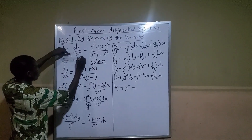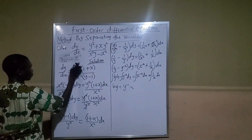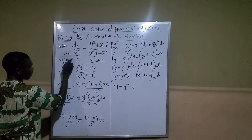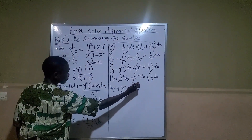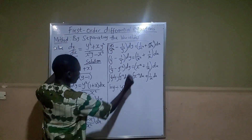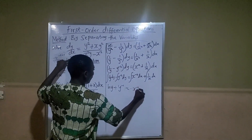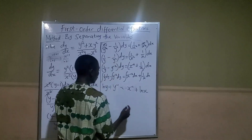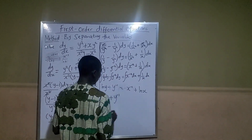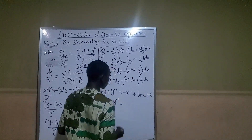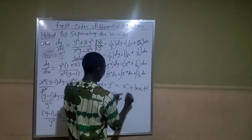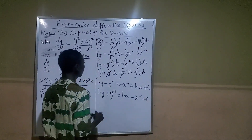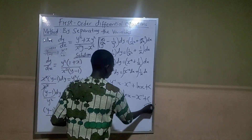For the right side: integrating x raised to minus two — add one to the power to get minus one, divide by minus one. That gives x raised to minus one over minus one. Using the minus sign out front gives minus x raised to the power of minus one. Integrating one over x gives ln x. So the final answer is: ln y plus y raised to the power of minus one equals ln x minus x raised to the power of minus one plus C, where C is the constant of integration. Stay tuned for more tutorial videos.